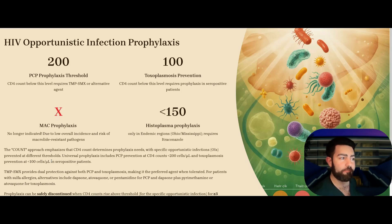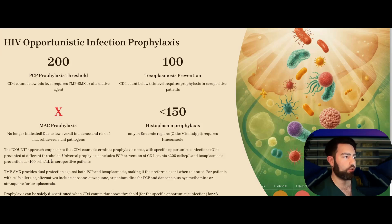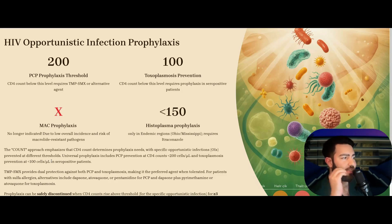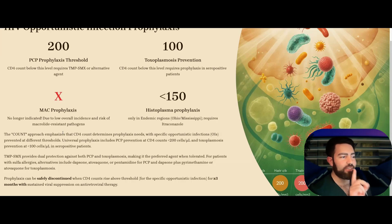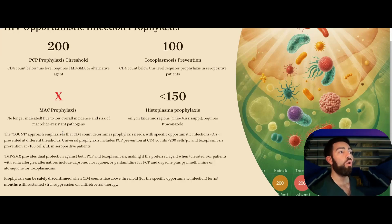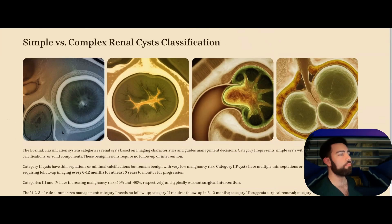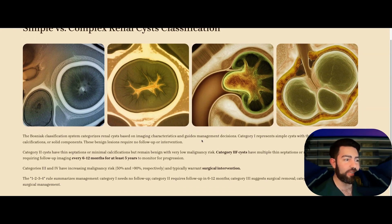HIV opportunistic infection prophylaxis: PCP at CD4 less than 200, Toxoplasma at less than 100, Histoplasma at less than 150 plus endemic region (Ohio/Mississippi River valley) requiring itraconazole. MAC prophylaxis is no longer recommended due to low incidence and risk of macrolide resistance. Discontinue prophylaxis when the CD4 count rises above the threshold for that specific infection for at least 3 months with sustained viral suppression on antiretroviral therapy.